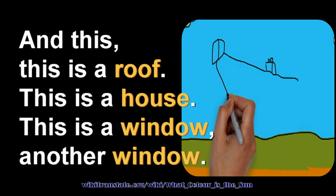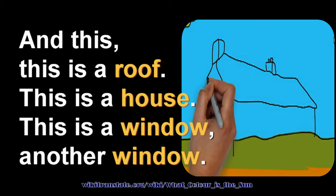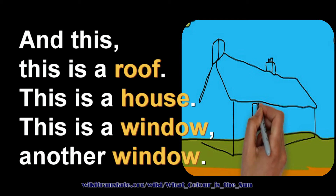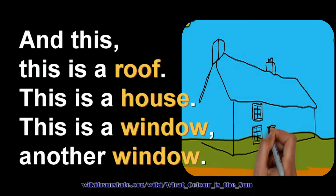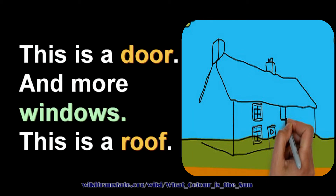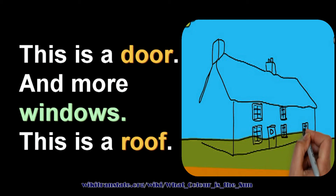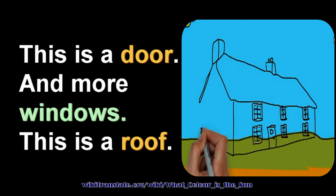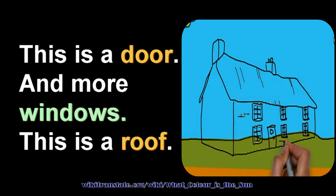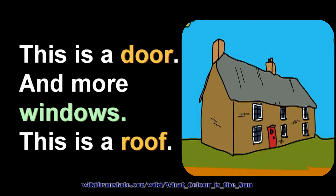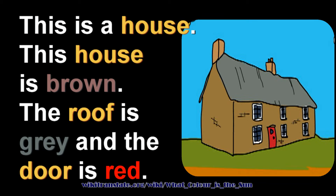This is a roof. This is a house — a window, another window, a door, and more windows. This house is brown. The roof is gray and the door is red.